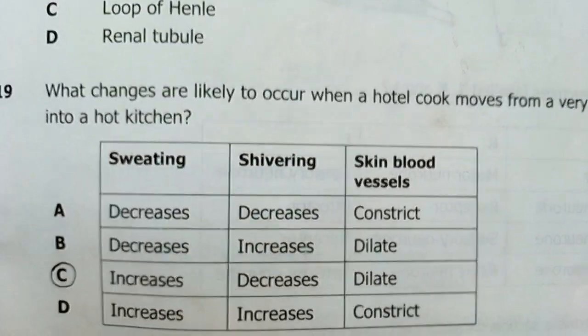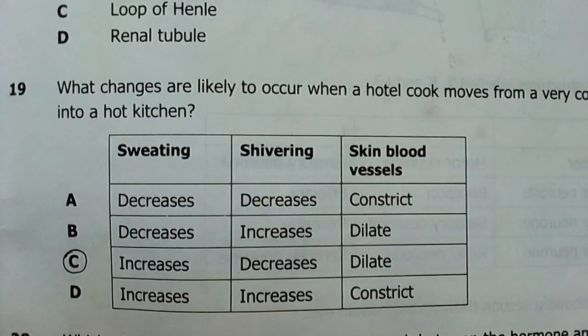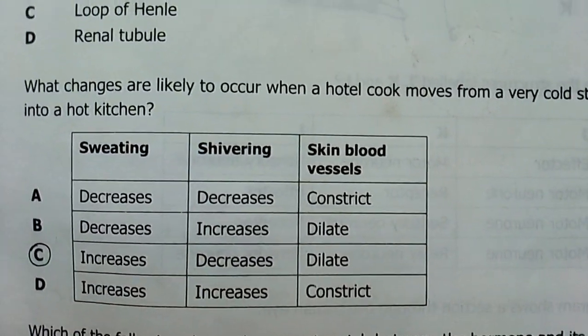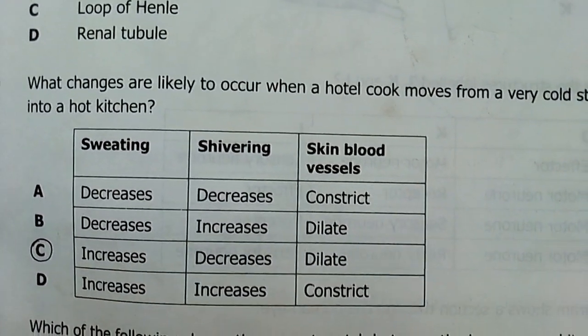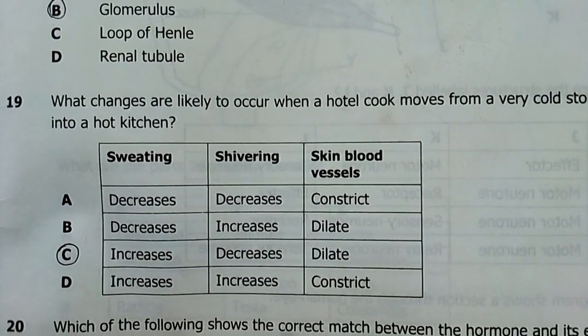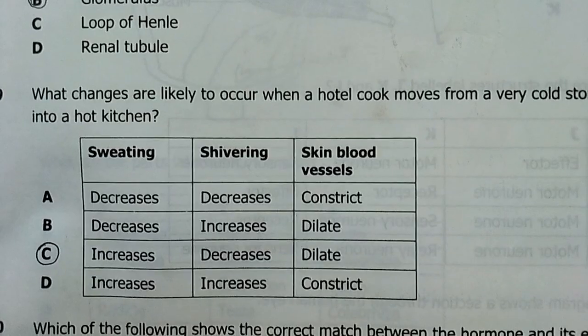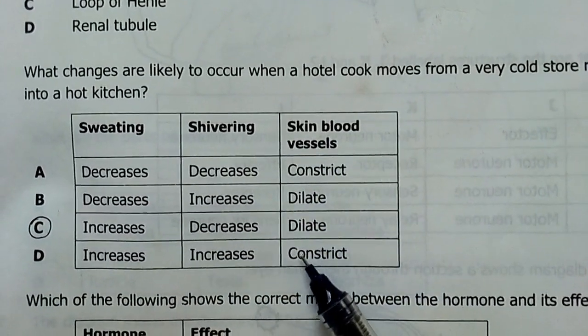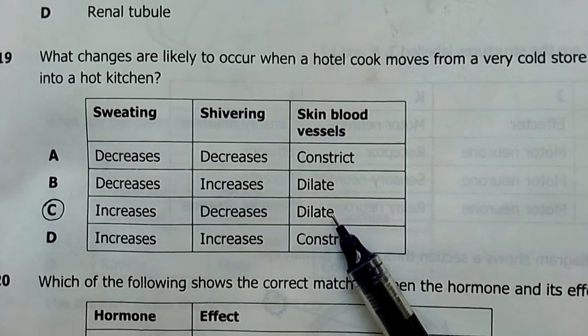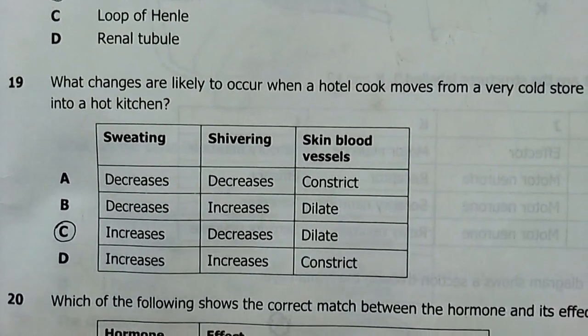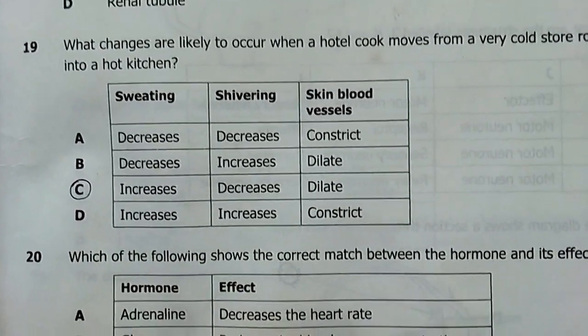Number 19, what changes are likely to occur when a hotel cook moves from a very cold storeroom into a hot kitchen? Sweating increases. Shivering decreases, you're moving to a warm place. Vessel dilation of blood vessels occurs. He's beginning to lose more heat because he's in an environment where there's already heat. He doesn't need to conserve the heat.